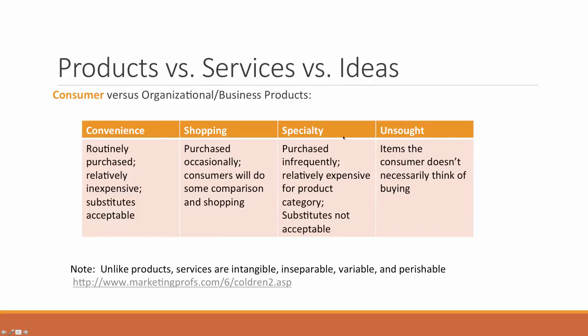We can also classify consumer products as unsought products. These are items that the consumer may need but doesn't necessarily think of buying — for example, pre-planning of funeral services, life insurance, or security systems. These are things people don't necessarily want, but they are definitely things people might need, so they are classified as unsought products.